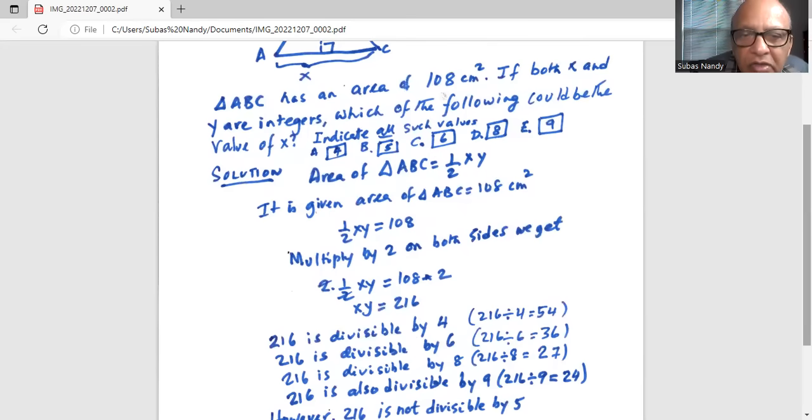So 216 is divisible by 4. This told us both x and y are integers. So if x is 4, then y is 54.